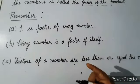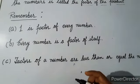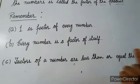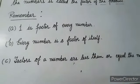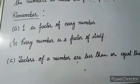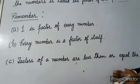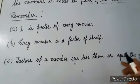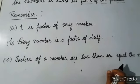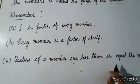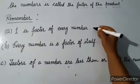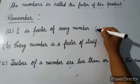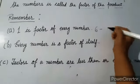Every number is a factor of itself — jo bhi number diya jaye, woh number khud us number ka factor hota hai. For example, six ka factor kya hoga? Six ka factor: one comes in one's table, two comes in two's table.